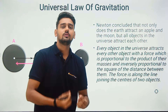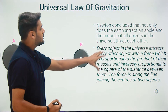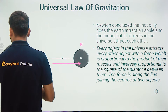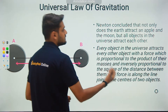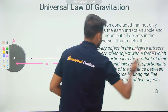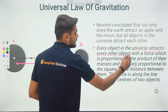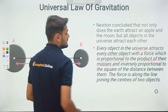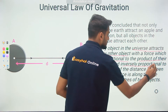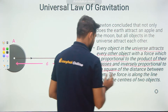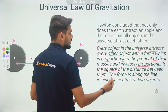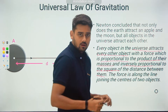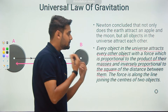The statement of this law — the universal law of gravitation — is: every object in the universe attracts every other object with a force which is proportional to the product of their masses and inversely proportional to the square of the distance between them. The force is along the line joining the centers of the two objects.